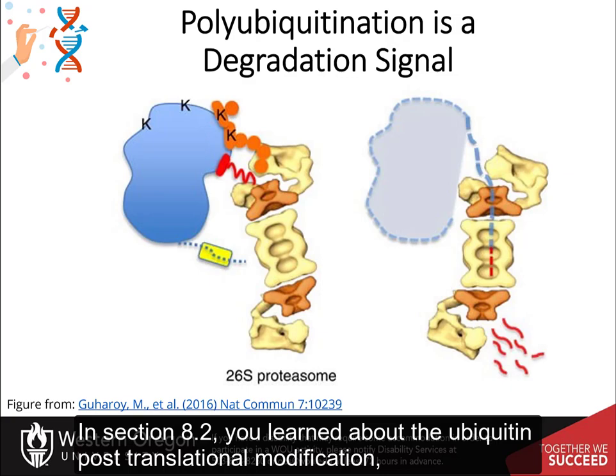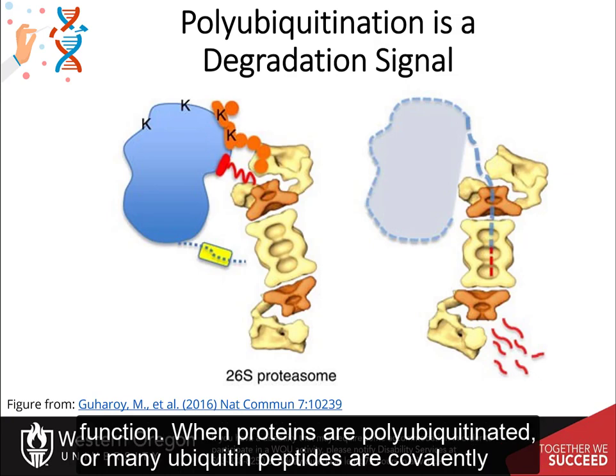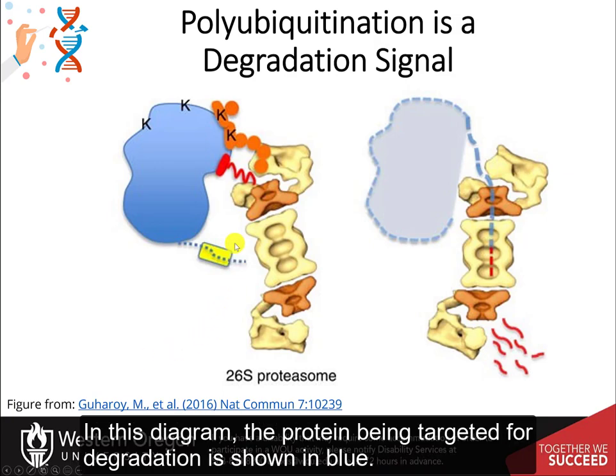In section 8.2, you learned about the ubiquitin post-translational modification, where the small peptide known as ubiquitin can be added to protein targets, altering their function. When proteins are polyubiquitinated, or many ubiquitin peptides are covalently added to the protein, this can serve as a signal for degradation at the 26S proteasome.